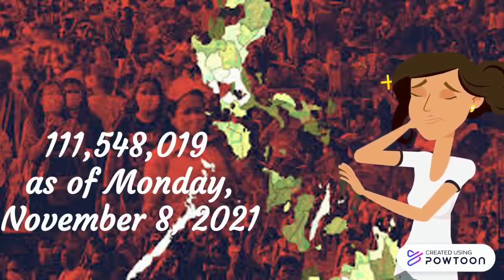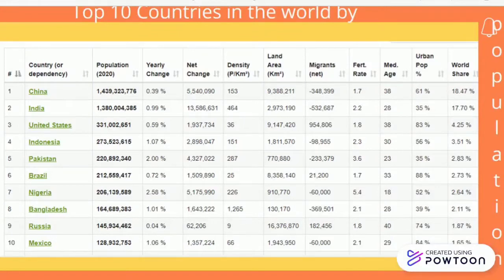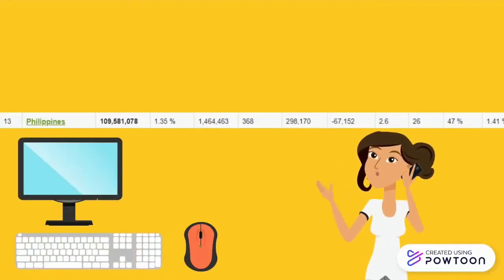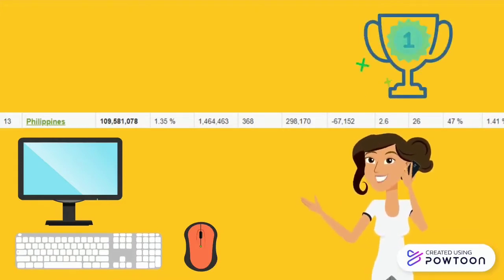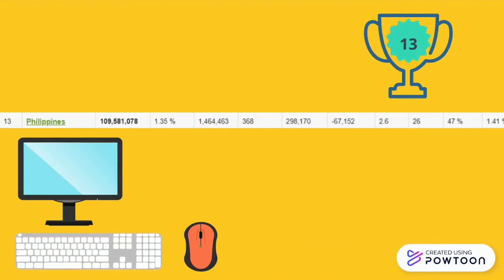I'll be showing you the top 10 countries with the biggest world share in terms of population. China ranks 1 with a world share of 18.47%, followed by India with 17.70%, and the third on the rank is United States with 4.25%. Philippines is in rank 13 with a world share of population of 1.41%.